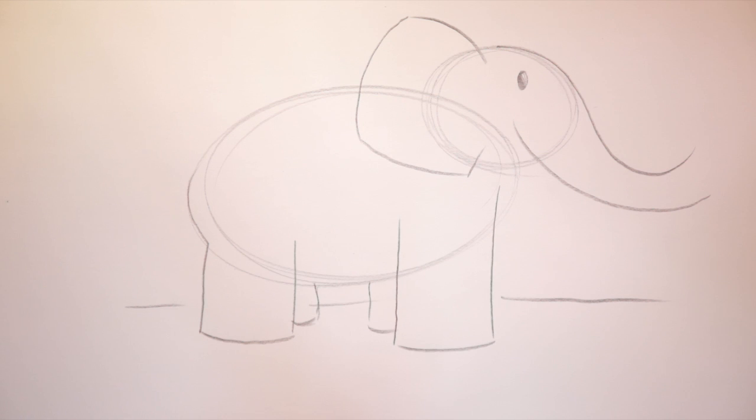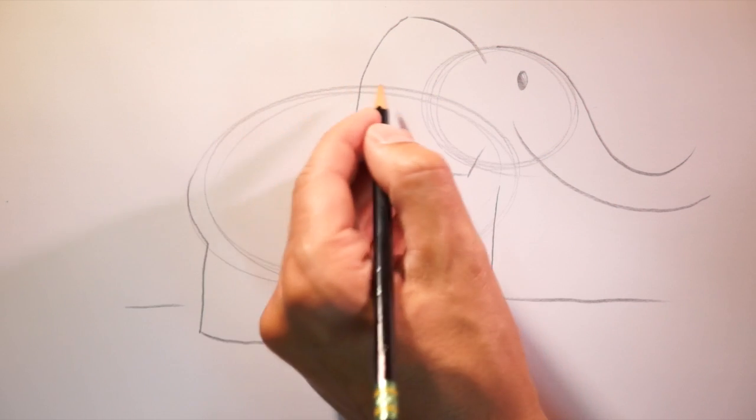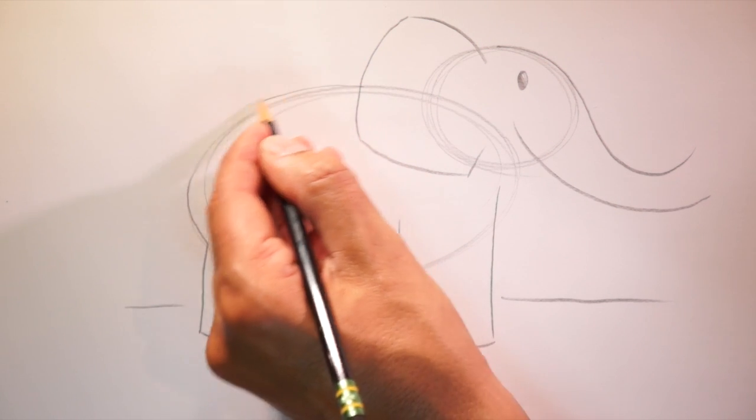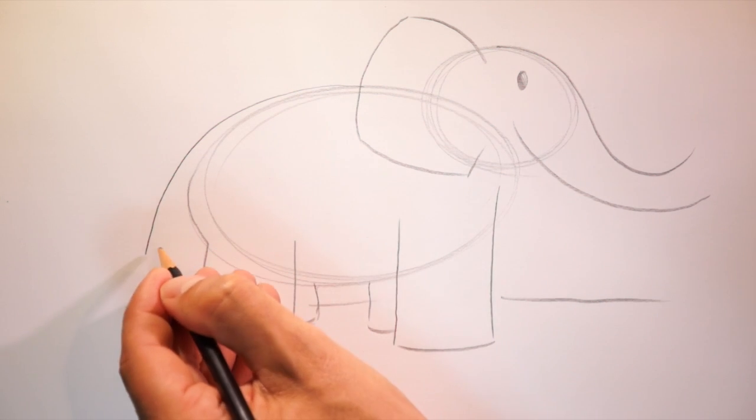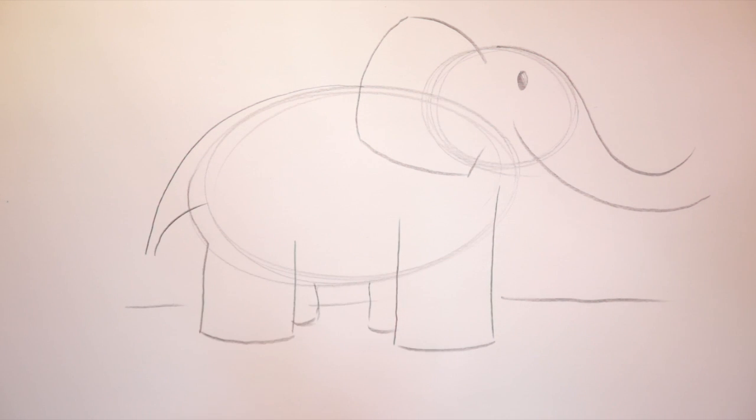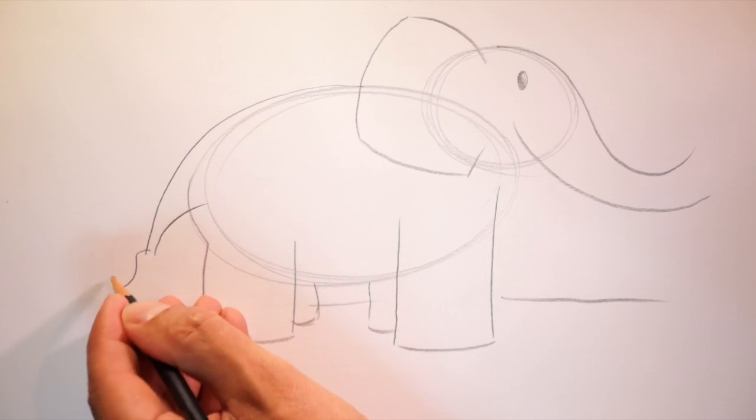Now an elephant has a tail. So I'm going to follow the contour of the elephant's body like this, going down. And then from the end of that line, back in towards the body like this. Now at the end of that tail, there's some hairs. Sort of like a paintbrush.